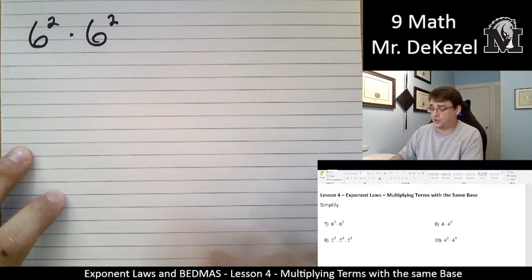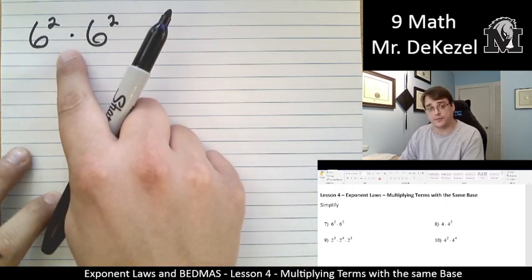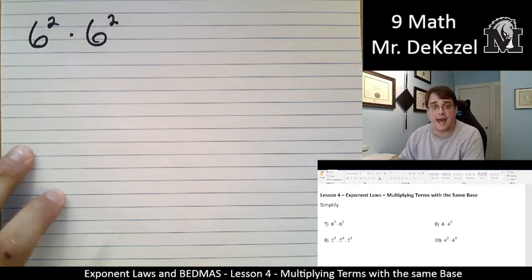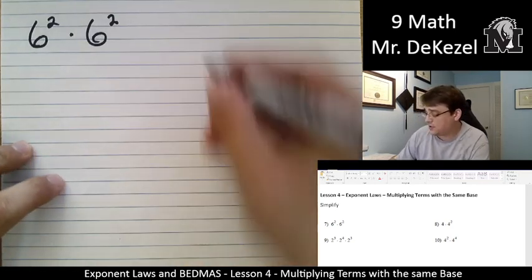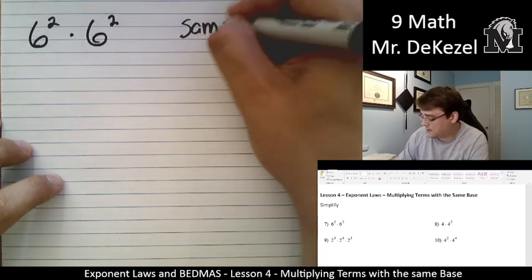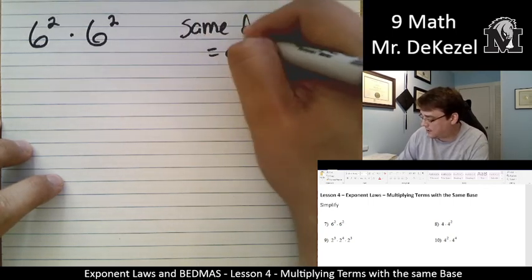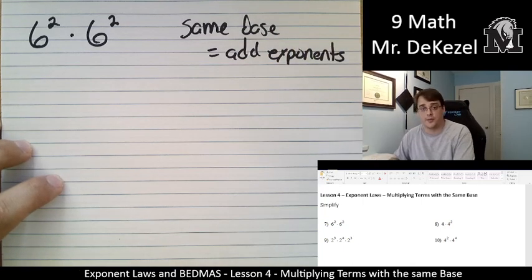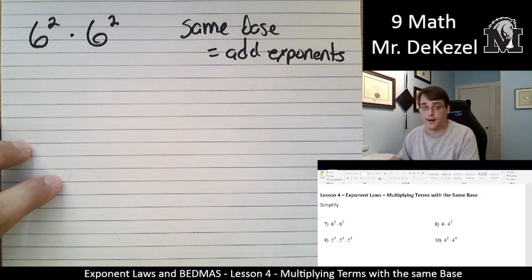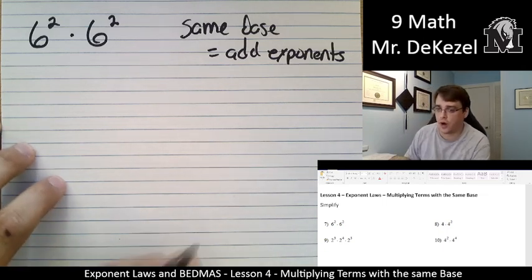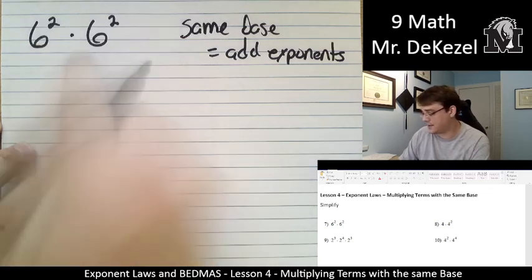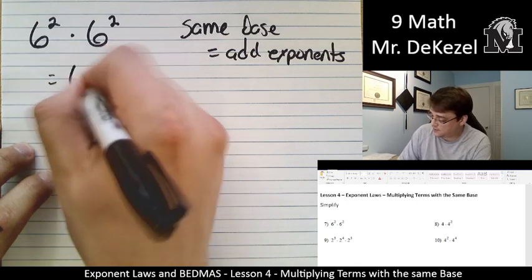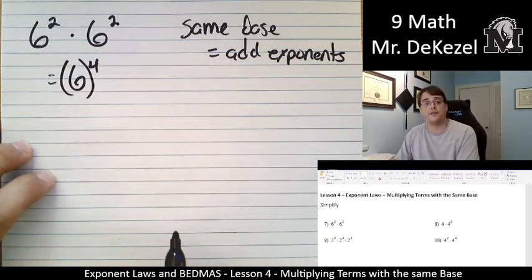When we have two things multiplied together, and that's what the dot means if you've never seen that before, that have the same base and they have exponents, what we do is we add the exponents. So same base, we add the exponents, and I think I made a poster somewhere about the exponent rules. Don't quote me, but it should be on the wall. So 6 squared times 6 squared, we just add the exponents, 2 plus 2 is 4. So this is 6 to the power of 4.